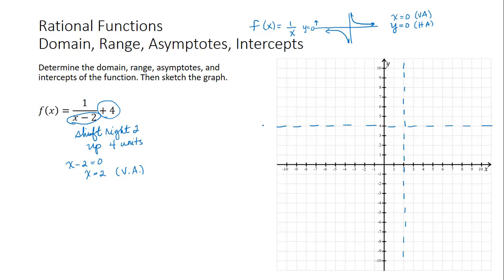And another way to think about that is that because 1 divided by x minus 2 will never be 0, the output of this function will never be 0 plus 4 or 4.